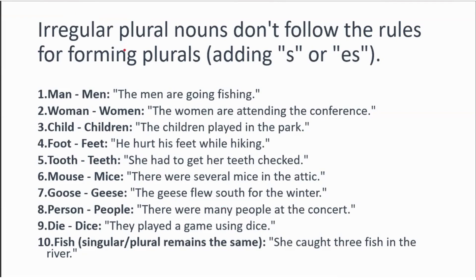Some nouns are irregular plural nouns, meaning we cannot form plurals by simply adding s or es — we have to memorize them. For example: man/men, woman/women, child/children, foot/feet, tooth/teeth, mouse/mice, goose/geese, person/people, die/dice.